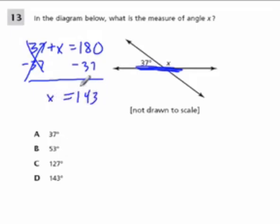And if you feel like this number is off, just check it by adding it to 37. And we do get 180. So here I get D again. The answer is 143 degrees.